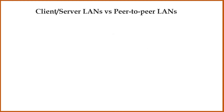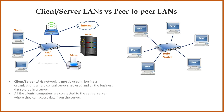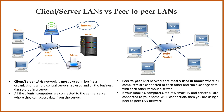A LAN network can be client-server LAN or peer-to-peer LAN. Client-server LAN networks are mostly used in business organizations, where central servers are used and all the business data is stored in a server. All the client computers are connected to the central server, where they can access data from the server. Peer-to-peer LAN networks are mostly used in homes, where all the computers are connected to each other and can exchange data without a server. If your mobiles, computers, tablets, smart TV, and printer are all connected to your home Wi-Fi connection, then you are using a peer-to-peer LAN network.